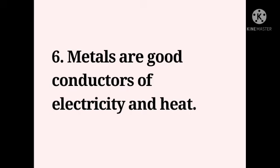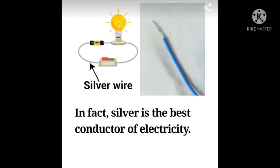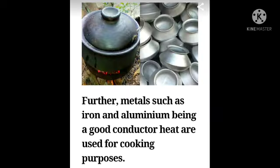The last physical property: metals are good conductors of electricity and heat. Silver is actually the best conductor of electricity, but being more expensive, it is replaced by other conductive metals like copper for most electrical purposes. Metals such as iron and aluminium, being good conductors of heat, are used for cooking purposes.